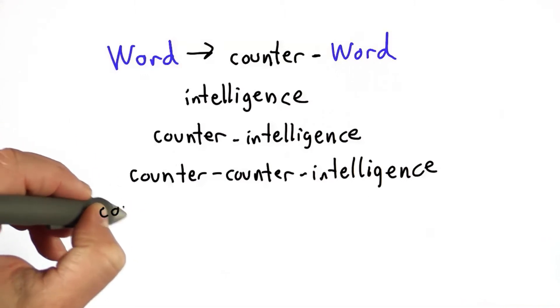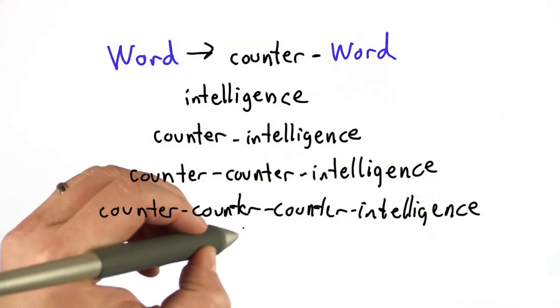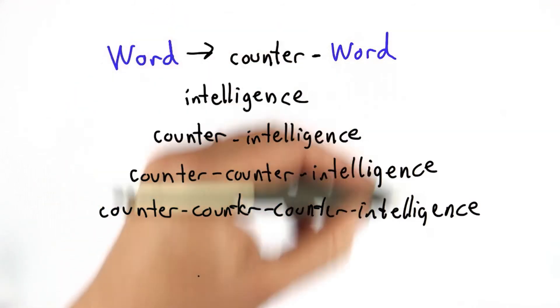And that would be trying to thwart the enemy's counterintelligence that's preventing you from getting intelligence. And we could keep doing that. We could have counter-counter-counterintelligence, and so forth. And these are words that once we get up to at least three counters, it's not something that's used before. But it's still something that has a sensible meaning. And we could do this for other words.